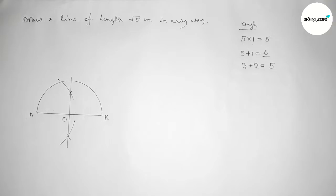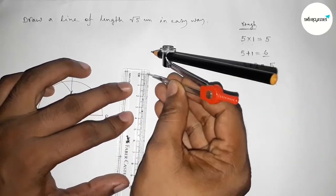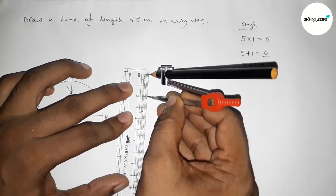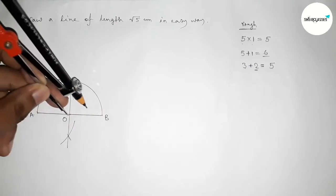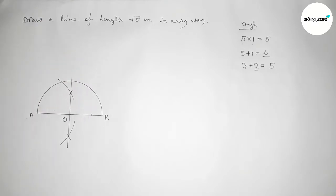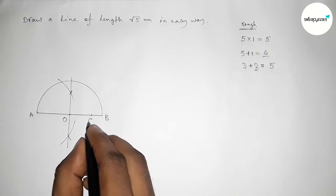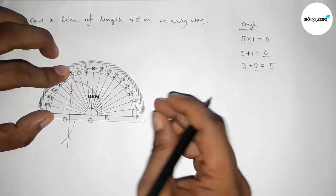Taking a 2 centimeter length using the scale — this is the 2 centimeter line. Putting the compass on point O and marking a point C, so the length OC equals 2 centimeter.